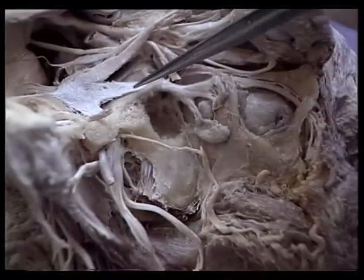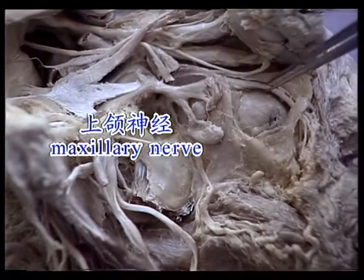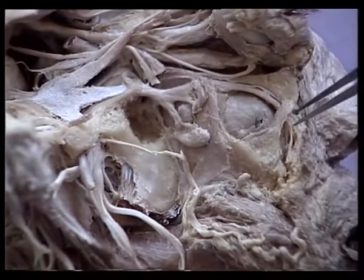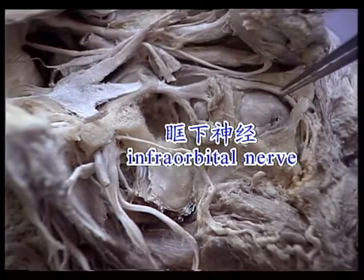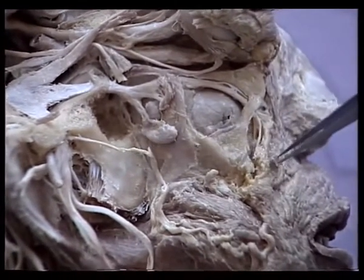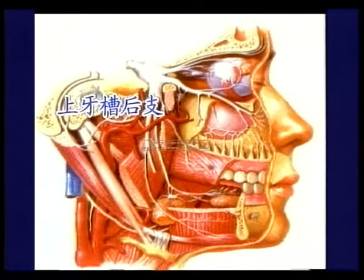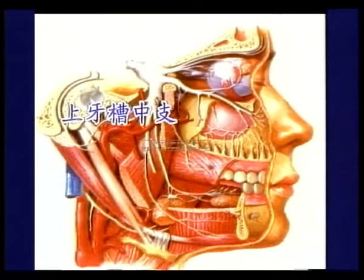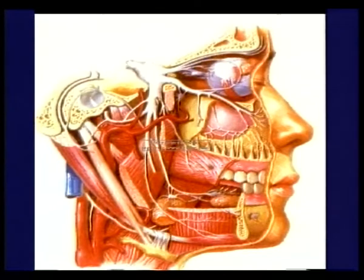上颌神经自三叉神经节发出后，经圆孔出颅，进入翼腭窝，再经眶下裂入眶。主要分支有：眶下神经，为上颌神经主支，经眶下裂入眶、眶下沟、眶下管，出眶下孔，分布于下睑、鼻翼、上唇的皮肤和黏膜；上牙槽神经分为后、中、前三支，其中上牙槽后支在翼腭窝内发出，上牙槽中支在眶下沟发自眶下神经，上牙槽前支在眶下管内发自眶下神经，三支分布于上颌牙齿及牙龈。